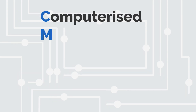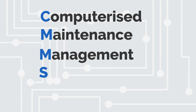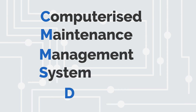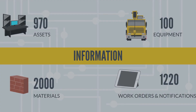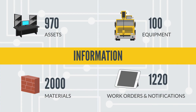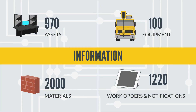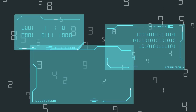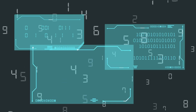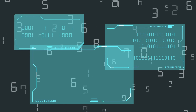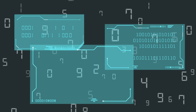The CMMS database is the core of every CMMS system. The database organizes information about the assets, equipment, materials, and other physical resources a maintenance organization is expected to maintain. The CMMS database facilitates many functions of the CMMS system, enabling various aspects of the following.